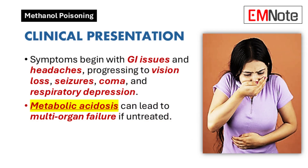Clinical Presentation: Initial symptoms manifest as gastrointestinal disturbances and cephalalgia. Disease progression exhibits three primary symptom clusters: visual manifestations including acuity reduction, vision blurring, and potential blindness; neurological symptoms progressing from seizures to coma and respiratory depression; and metabolic acidosis as blood pH decreases. Advanced cases may progress to multi-organ failure with potential mortality.